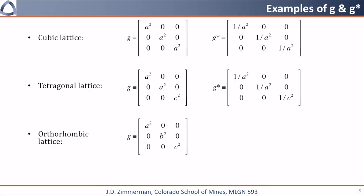Similarly, G is given for the orthorhombic lattice. The reciprocal metric tensor for the orthorhombic lattice is given by 1 over a squared, 1 over b squared, and 1 over c squared down the diagonal.